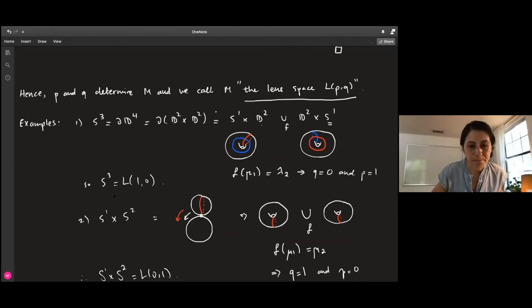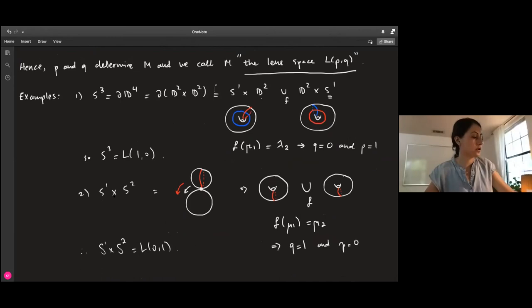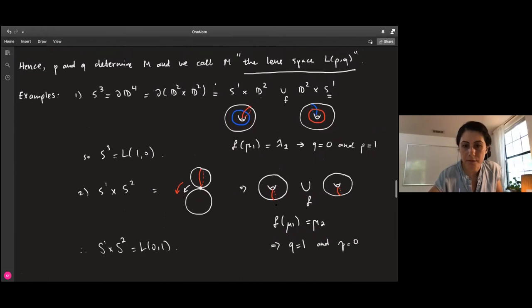Similarly, yesterday during problem session we talked about S¹ × S². We can see this space as at each point in S¹, you consider a two-sphere by gluing two discs together. It's again obtained by gluing two solid tori. But this time, they both bound the disc - the meridian bounds the disc in both. So the homeomorphism in this case sends meridian to meridian. Then Q is one and P is zero. It turns out that S¹ × S² is the lens space L(0,1).